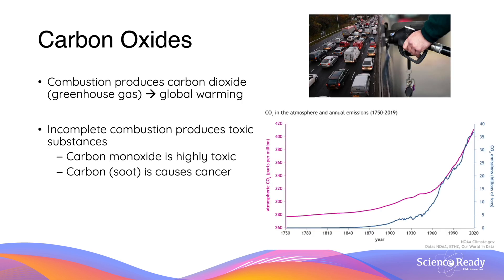Carbon is a key element of biological systems, and in particular carbon dioxide. The complete combustion of a fuel will lead to the development of carbon dioxide, which is a greenhouse gas and contributes to global warming. Incomplete combustion is going to produce carbon monoxide, CO, which is a highly toxic gas, and also carbon or soot, which is a known carcinogen.